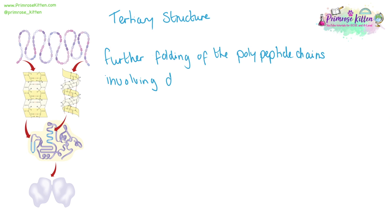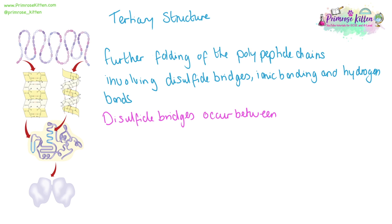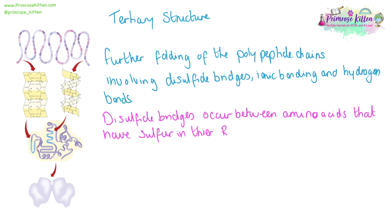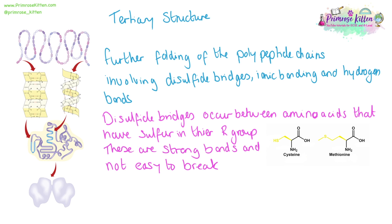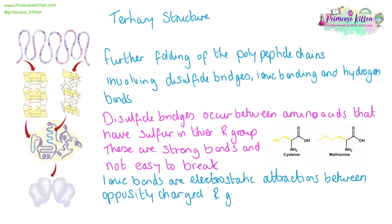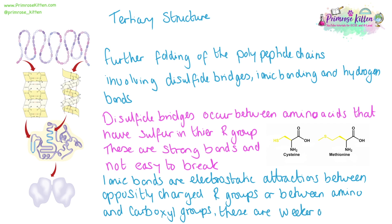After the polypeptide chain has been folded into either an alpha helix or a beta pleated sheet, further folding of the polypeptide chain involving disulfide bridges, ionic bonding, and more hydrogen bonding takes place. Disulfide bridges form between amino acids that have R groups with sulfur in them. These are very strong bonds and are not easy to break. Ionic bonds are electrostatic attractions between oppositely charged R groups or any amino or carboxyl groups not already involved in hydrogen bonding. These are weaker than disulfide bridges and are easily broken.